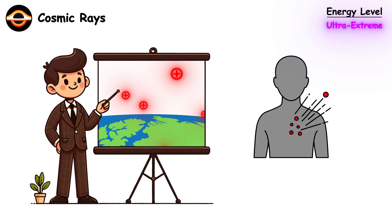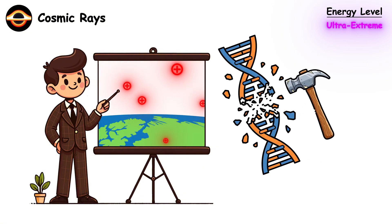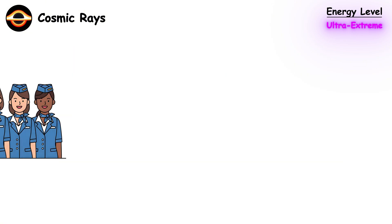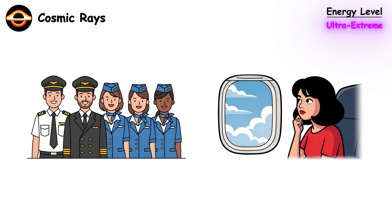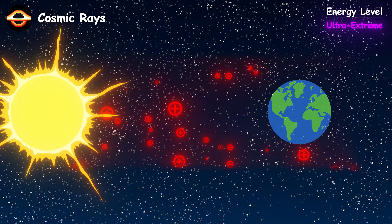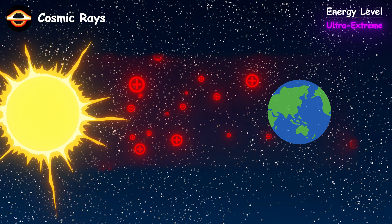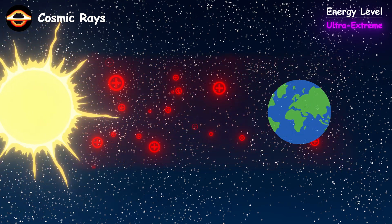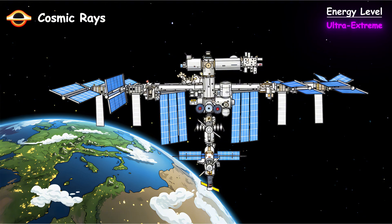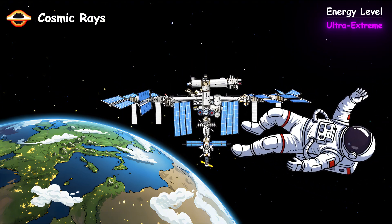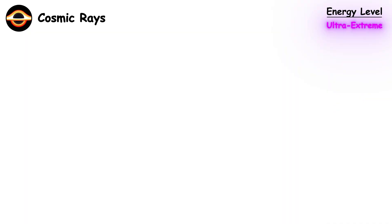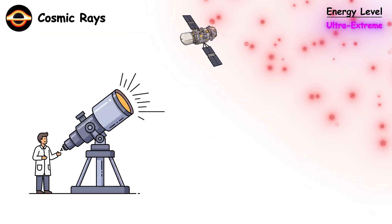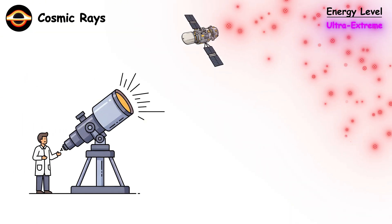Your body handles low-level cosmic ray exposure without major problems thanks to DNA repair mechanisms. However, flight crews and frequent flyers accumulate significantly higher doses than ground-level populations. The greatest risk occurs during major solar particle events when cosmic ray flux increases dramatically. Astronauts caught outside Earth's magnetosphere during such events could receive lethal radiation doses. This makes solar particle monitoring crucial for space missions beyond low Earth orbit.